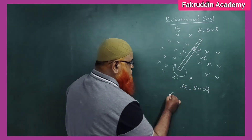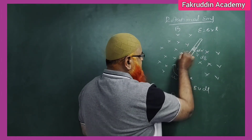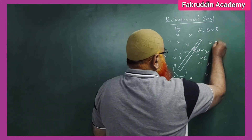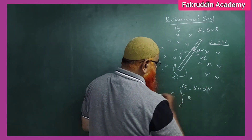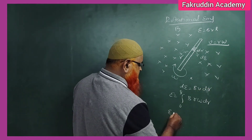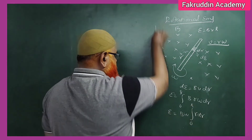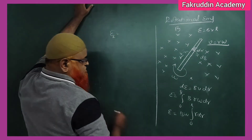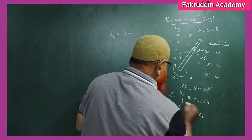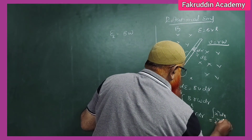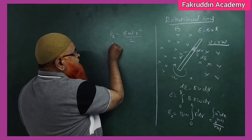To find the total EMF, we integrate from 0 to L: E = ∫B·v·dR. Since v = Rω (from rotational dynamics), we substitute: E = ∫B·Rω·dR = Bω·∫R·dR from 0 to L. Using the integration formula for x^n, where n=1, we get R²/2. Therefore, the Rotational EMF = ½·B·ω·L².